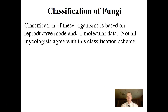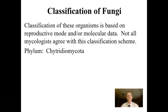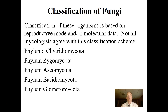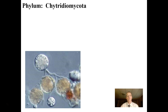Fungi are classified based on their reproductive mode or on molecular data, like sequences of DNA, RNA, or amino acid sequences. Not all mycologists agree with the classification scheme I'll be showing, but it aligns with our online textbook. The phyla of kingdom fungi include Chytridiomycota, Zygomycota, Ascomycota, Basidiomycota, and Glomeromycota. Each phylum contains species with common characteristics.